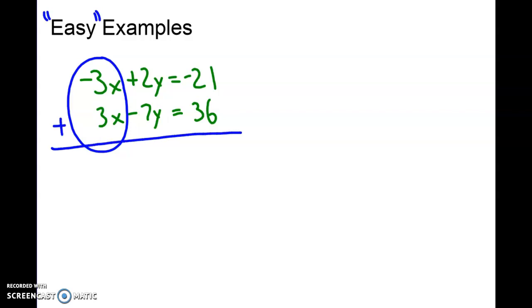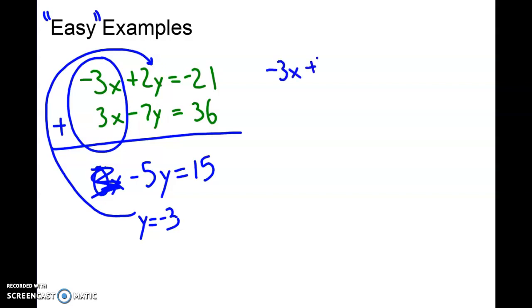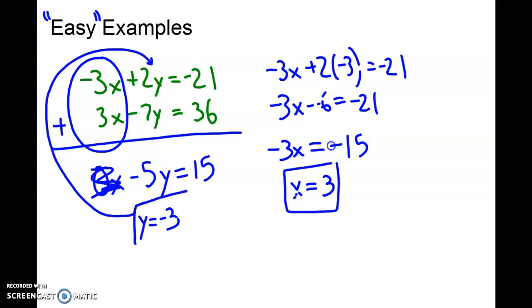When I add the equations together, these x's cancel out. I have 0x's. Then I have 2 plus negative 7 for negative 5y equals 15. So the x is gone and I just have a simple equation, negative 5y equals 15. y has to equal negative 3. I plug this into either equation - I like to pick the one with the smaller numbers. Negative 3x plus 2 times negative 3 equals negative 21. That's negative 3x minus 6 equals negative 21. Add 6 to both sides, and that gives me negative 3x equals negative 15. So x will equal just regular old 3. Box it, walk away.